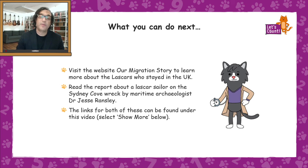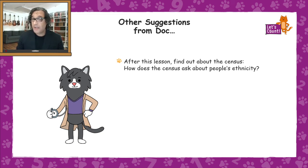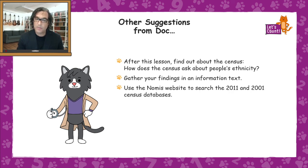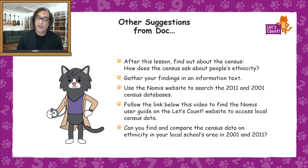The links for both of these can be found under this video. After this lesson, find out about the census — how does it ask people about their ethnicity? Gather your findings in an information text. Use the Nomis website to search the 2011 and 2001 census database. Follow the link below this video to find the Nomis user guide on the Let's Count website to access local census data. Can you find and compare the census data on ethnicity in the area around your school in 2001 and then 10 years later in 2011?